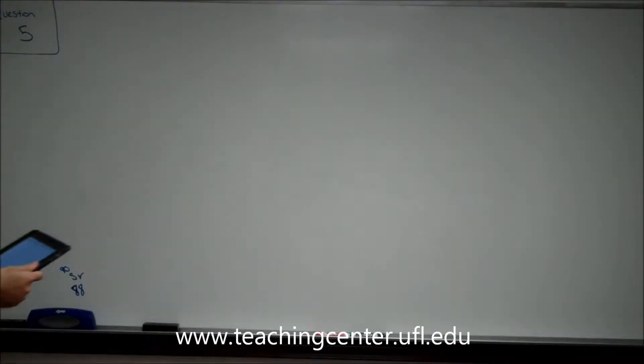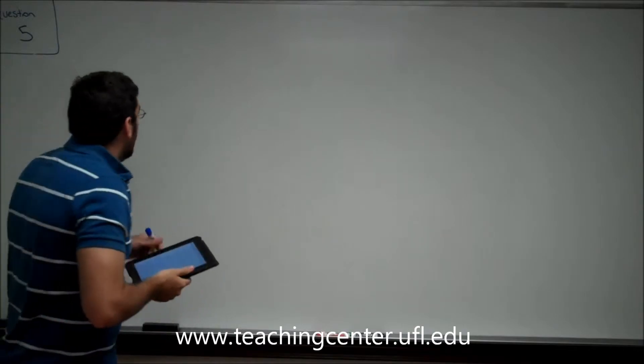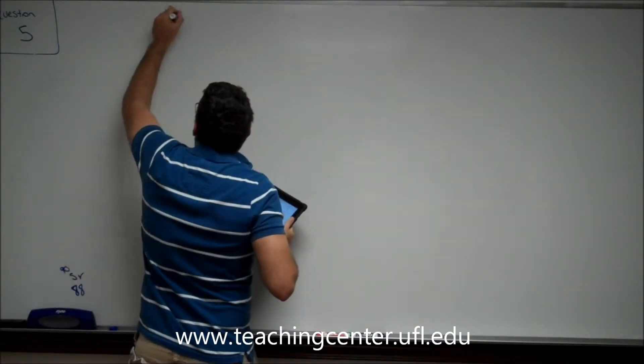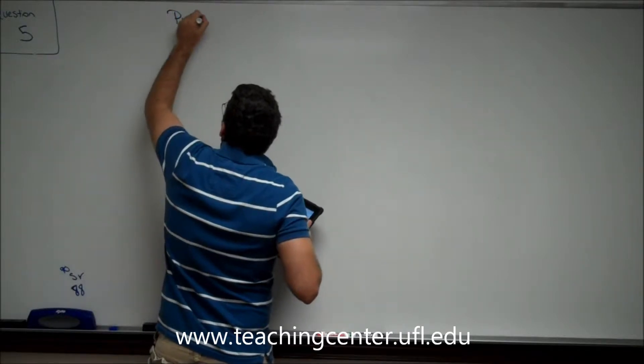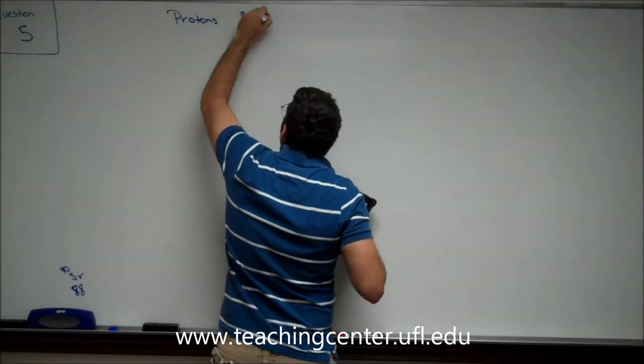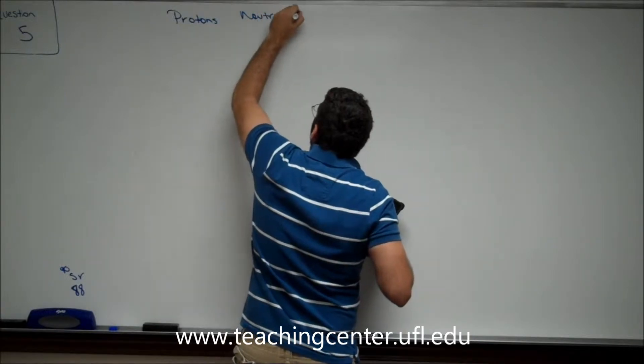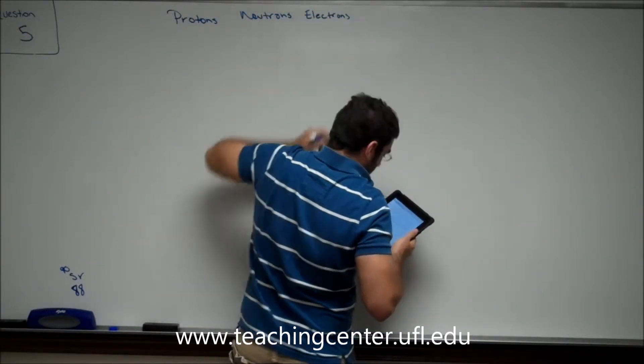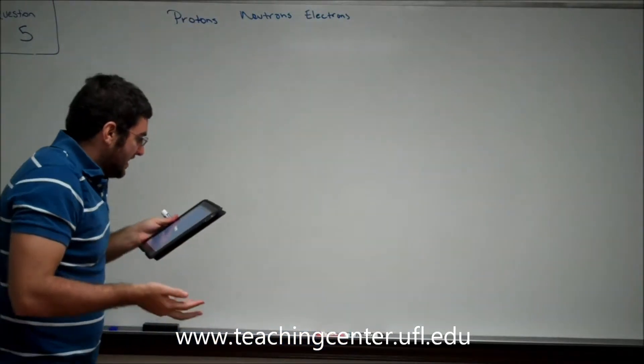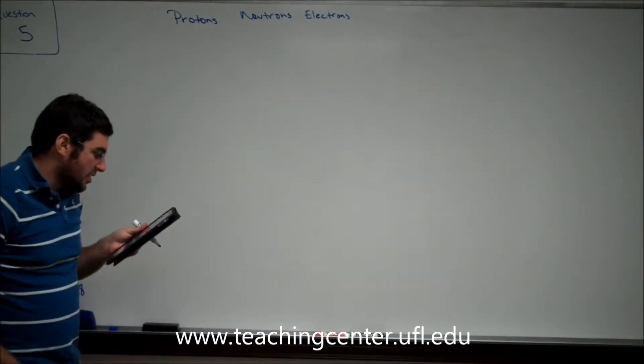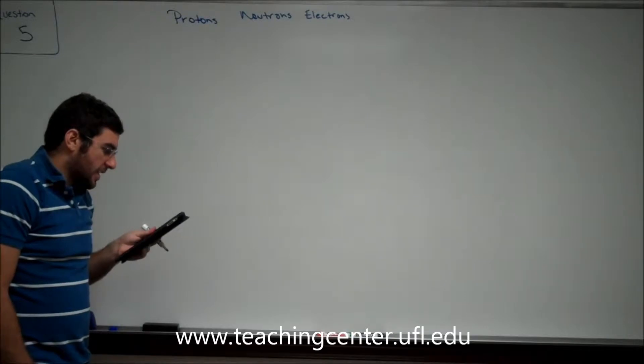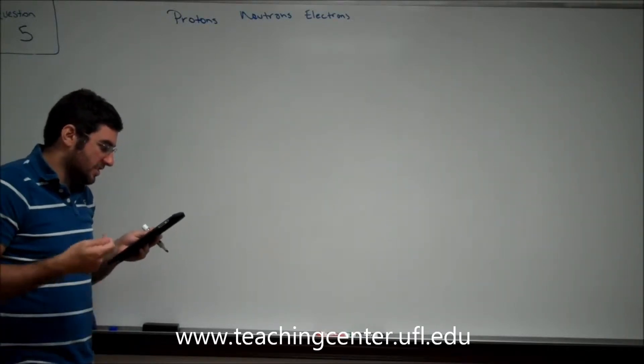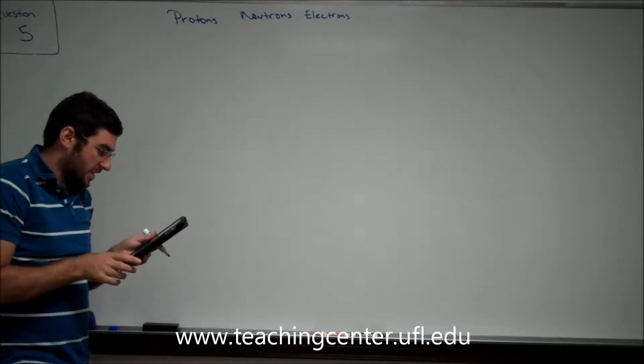Question number five wants to challenge us on our knowledge of protons, neutrons, and electrons. It says, the strontium-90 isotope is present in radioactive folio. When strontium-90 forms an ion, how many protons, neutrons, and electrons will it have in that order?